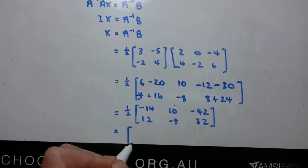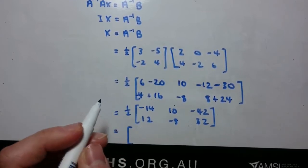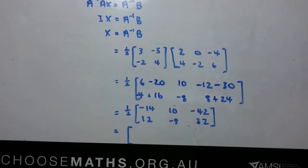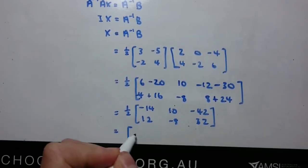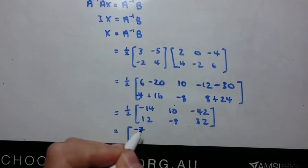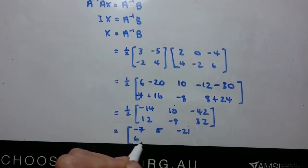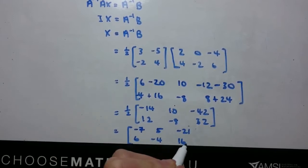Now all we need to do is bring that fraction into the brackets or into the matrix. And when we multiply that half in, we get negative 7, 5, negative 21, 6, negative 4 and 16.